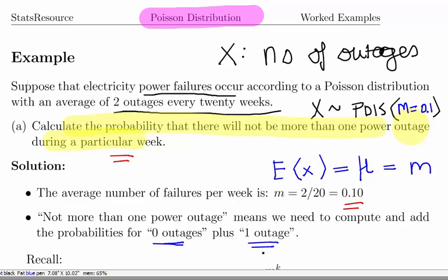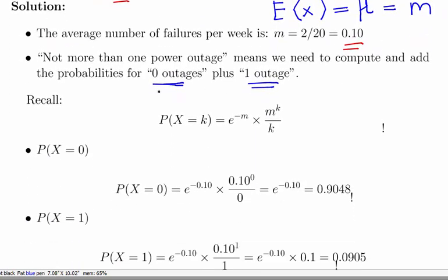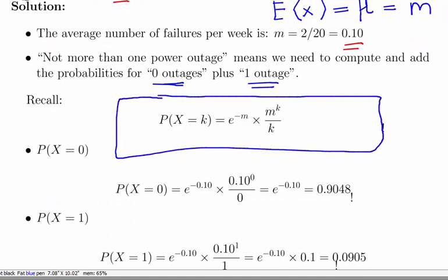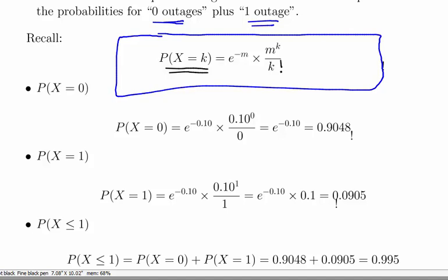This is the probability mass function: P(X = k) equals e to the minus m times m to the power of k over k factorial. That is the probability of X being some particular value k, where k is a possible outcome—0, 1, 2, 3, all the way up to infinity.